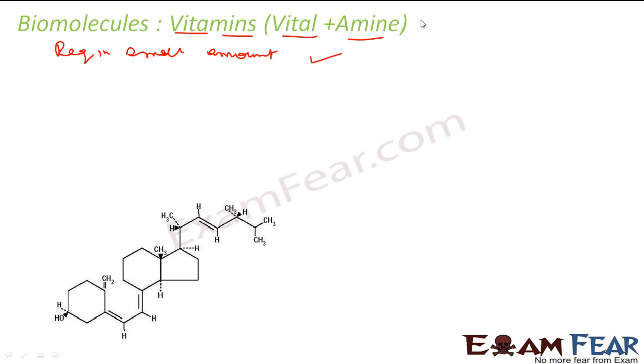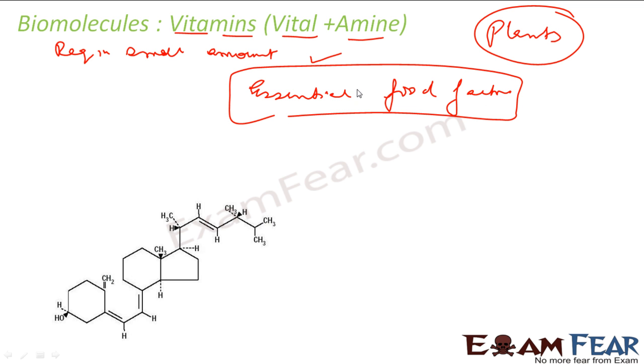Most vitamins cannot be synthesized in the body, so you have to take them in food. Plants synthesize almost all vitamins. These vitamins are essential food factors. If you don't take them properly, you'll get disease - that's why the word vital is there. There are 13 vitamins recognized globally.